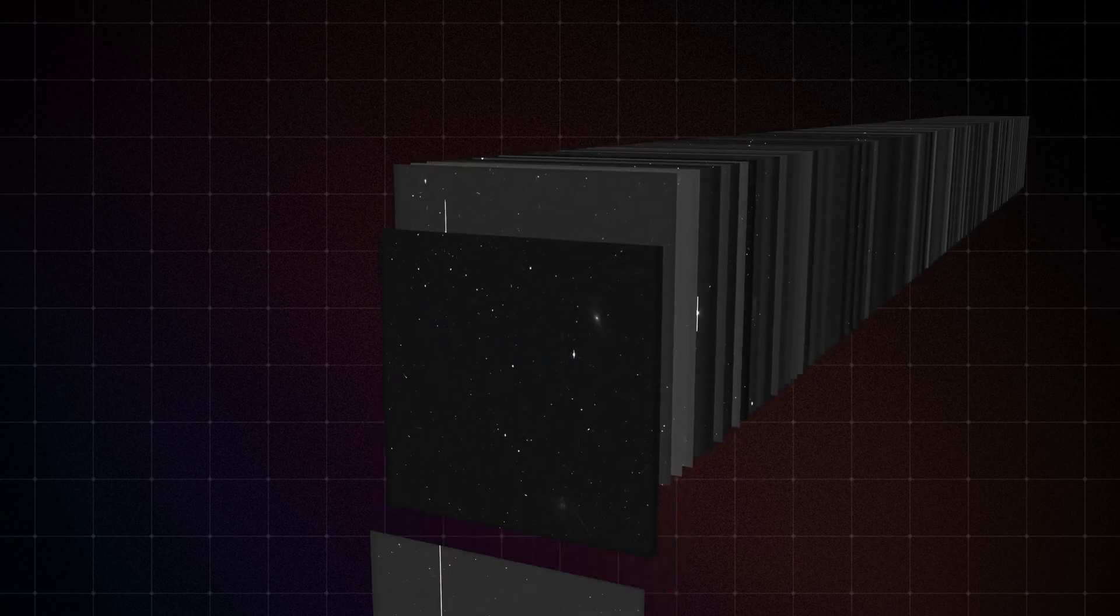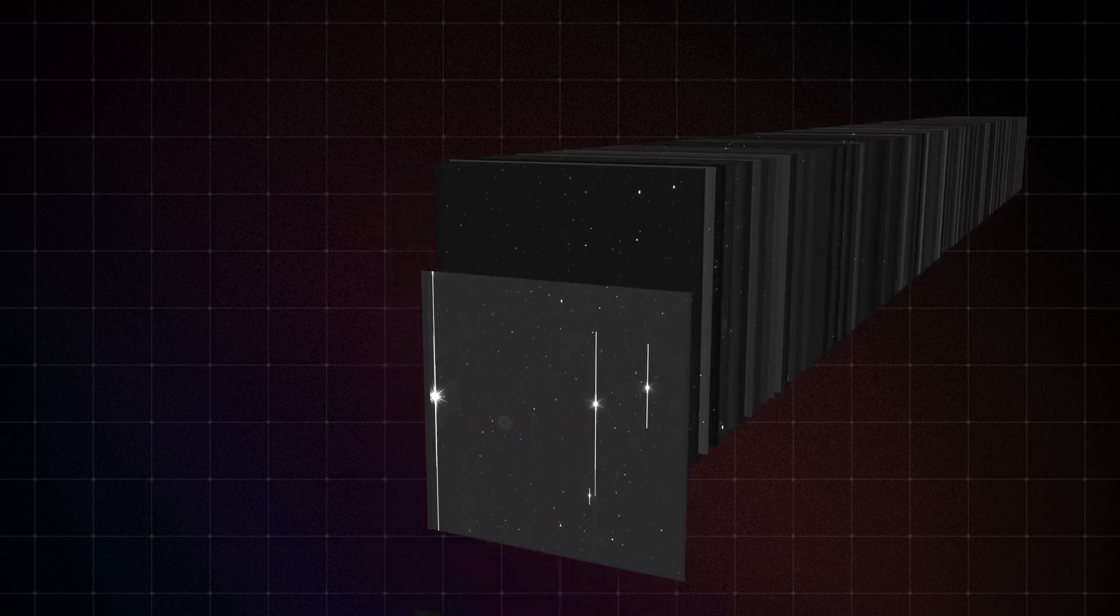For Euclid's visible data, it comprises 144 image frames. Each frame represents a quadrant of a Euclid visible image detector. Every four quadrants form one CCD, and Euclid's VIS camera has a total of 36 CCDs.